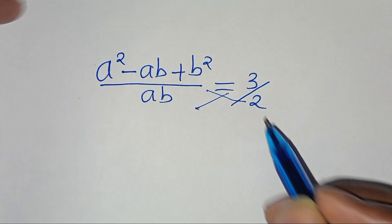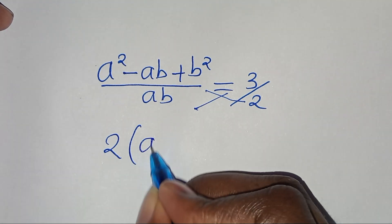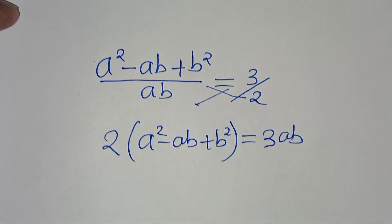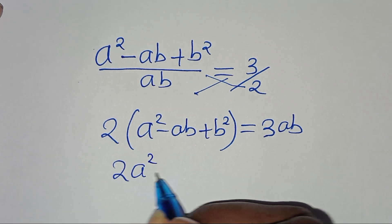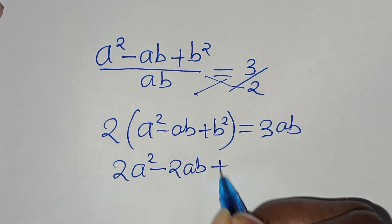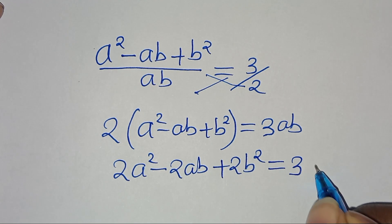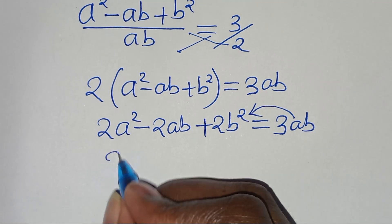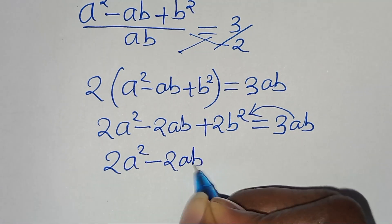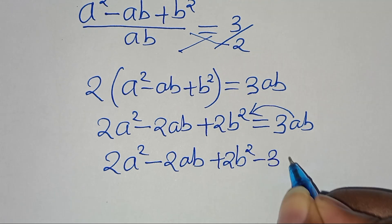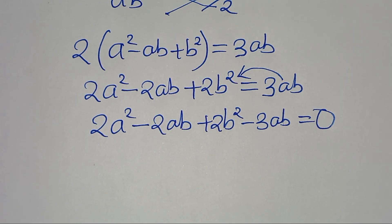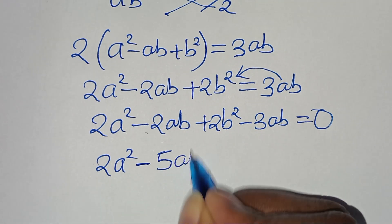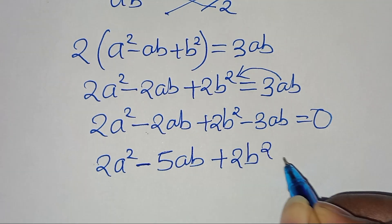Now the next step is to cross multiply, so that we have 2 multiplied by (a squared minus ab plus b squared), equal to 3 multiplied by ab. Opening the parentheses, this is 2a squared minus 2ab plus 2b squared, equal to 3ab.